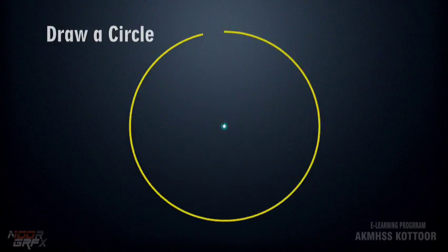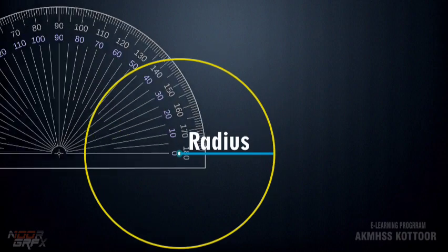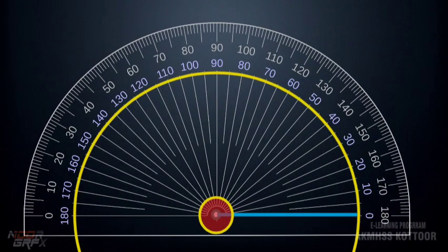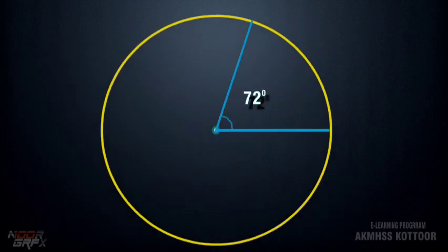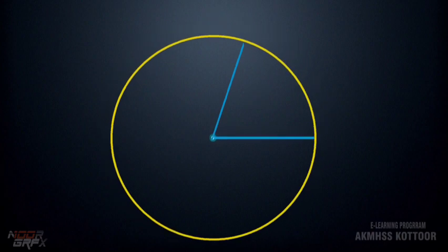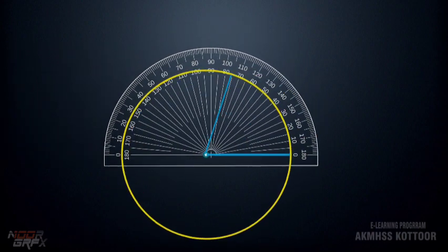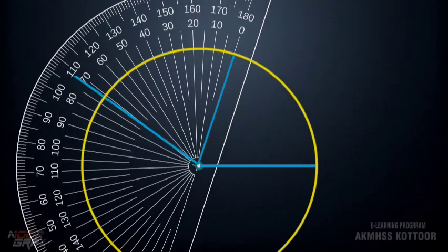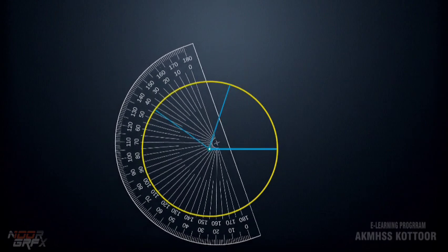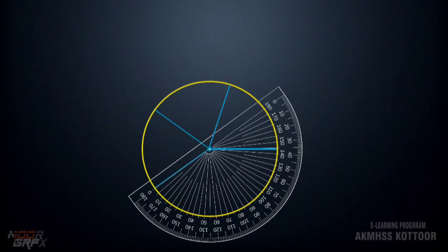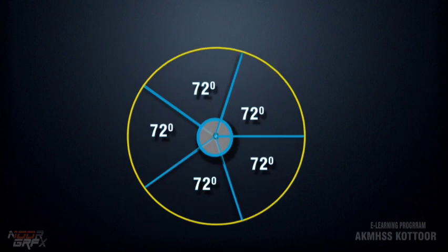We go to the angle measurement. First, draw a circle. Mark the radius and place the protractor on the center point. Mark 72 degrees. Then place the protractor again and mark 72 degrees. Repeat the same process 2 more times. We get 5 equal parts in the circle.